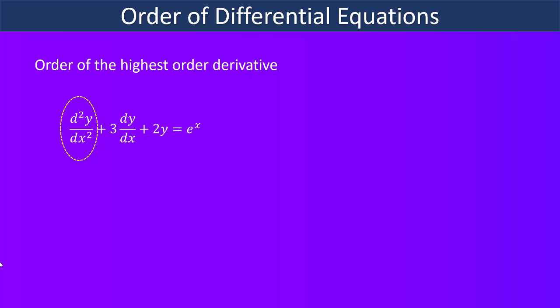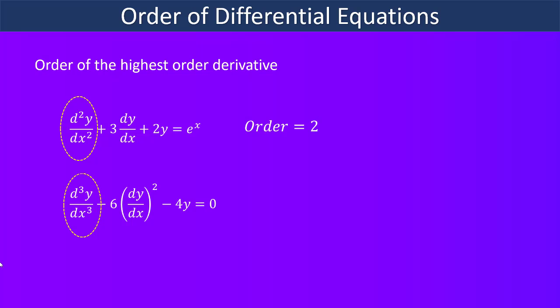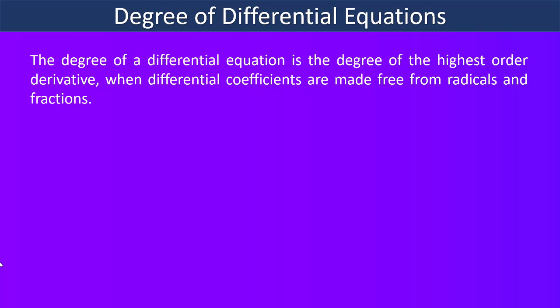The equation d³y/dx³ − 6(dy/dx)² − 4y = 0 is of order 3 because the order of the highest order derivative is 3. Please note that the order of a differential equation is always a positive integer.